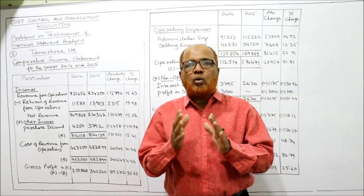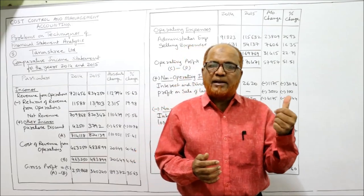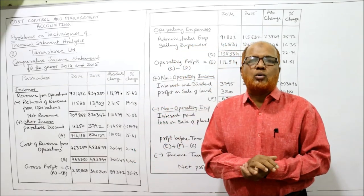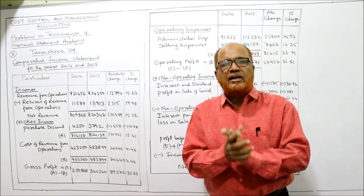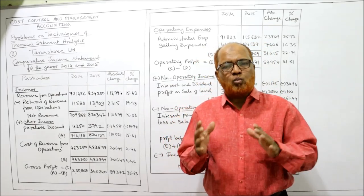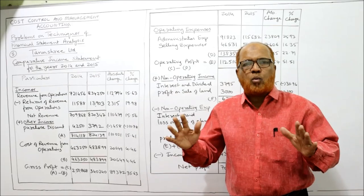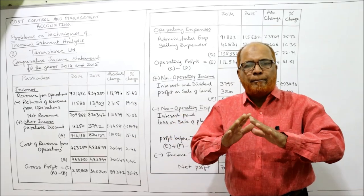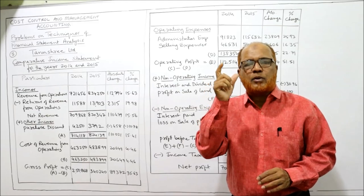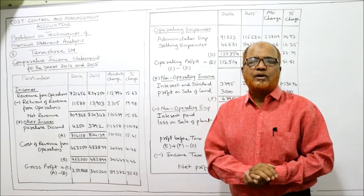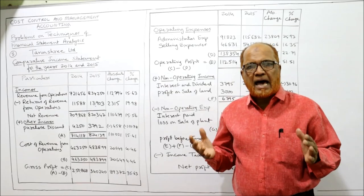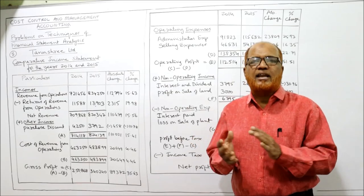If you have not watched those videos, I suggest you to go to the playlist of my channel. Select the subject cost control and management accounting. Select the video of techniques of financial statement analysis and watch the first two videos. Be clear about the meaning, concept and procedure of these three techniques: comparative, common size and trend analysis.